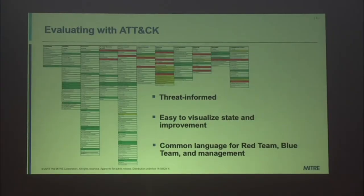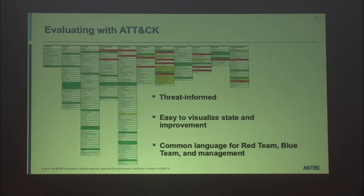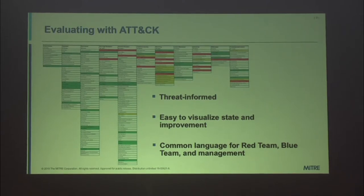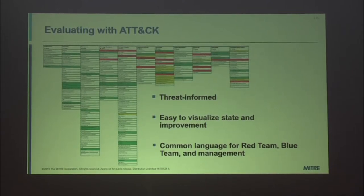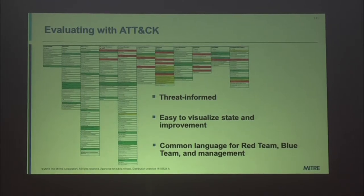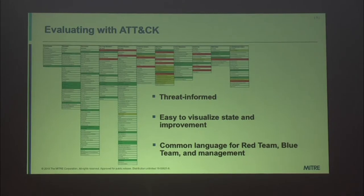A few things to remember about ATT&CK: it is threat-informed, which makes it great for testing. You're not dealing with what could be — you're dealing with what is, refocusing detection on making actual improvements to your products. Secondly, easy visualization: green means you detected, red is a miss, yellow is a partial. It allows you to show incremental improvements — you can see yellows turning to green, reds turning to yellows, and gradually fill out the ATT&CK matrix. Finally, it is that common language everybody can understand, at an abstraction level that talks about high-level goals in terms of tactics, and how those goals are achieved through techniques.